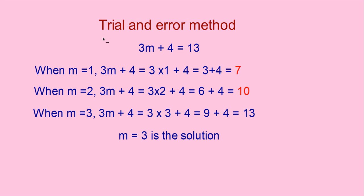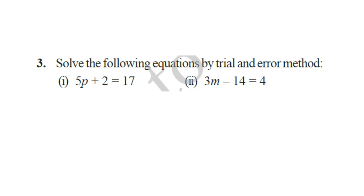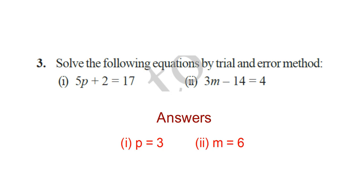This method of finding the solution, we can call it the trial and error method. You find the solution by substituting values of p for 1, 2, 3, etc., till you satisfy the equation. The answers are p is equal to 3 and m is equal to 6. Verify yourself.